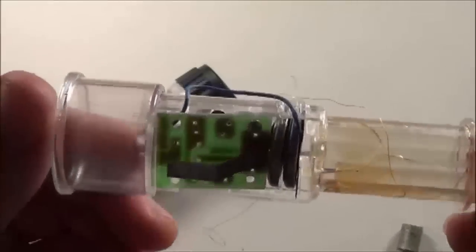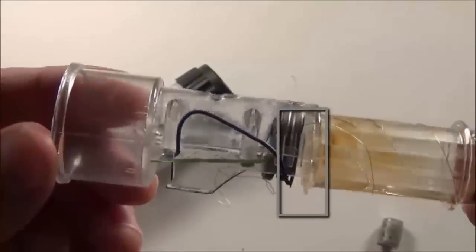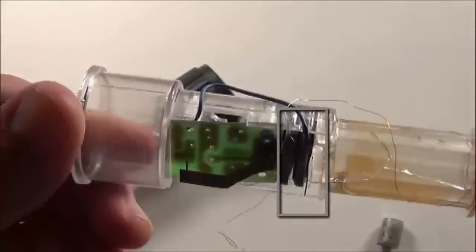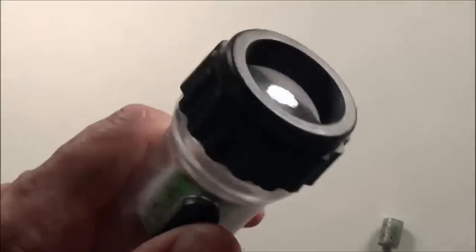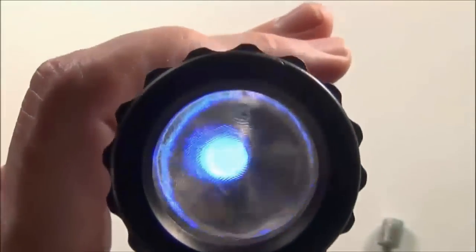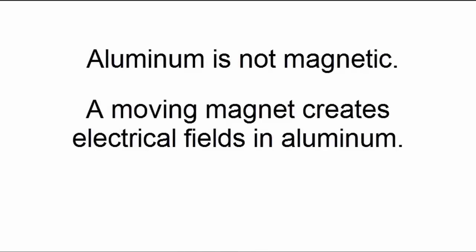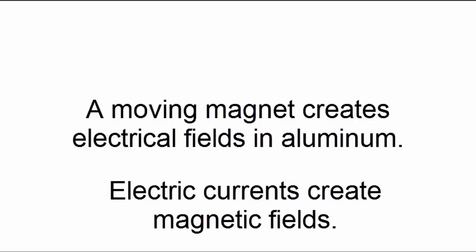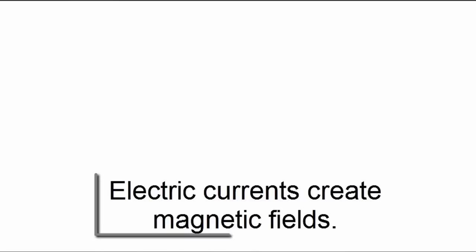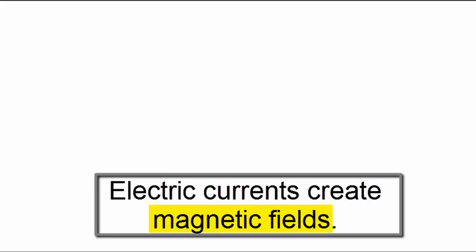We store those electrical currents in batteries, and then we can use the shake light later to generate light when we might need it. So we know aluminum is not magnetic, and when we have aluminum moving near a magnet or a magnet near aluminum, we create electrical fields. Whenever we create an electrical field, it also creates a magnetic field.